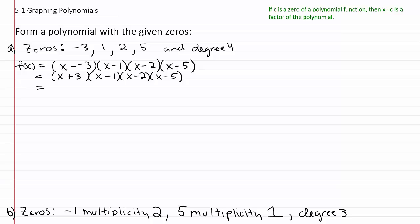So x times x will give us x squared, and then x times negative one will give us negative x. Then we have three times x, which is positive three x, and then three times negative one, which is negative three. Then we can combine like terms: x squared minus x plus three x gives you plus two x, and then minus three. So the first trinomial is x squared plus two x minus three.